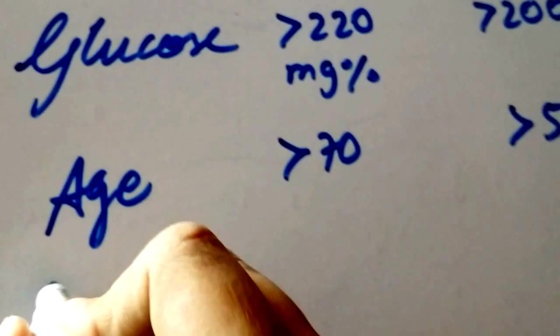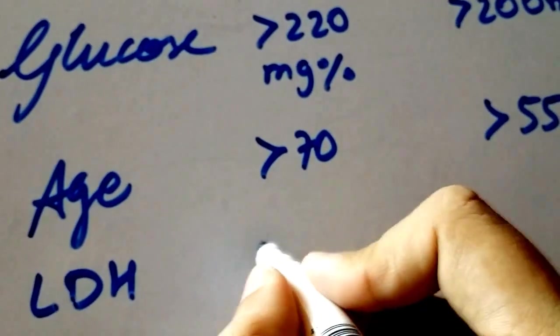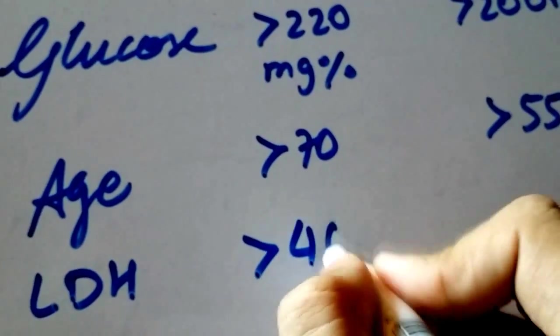L stands for LDH. And in gallstone pancreatitis, it's greater than 400.